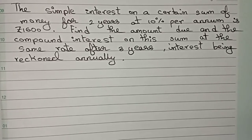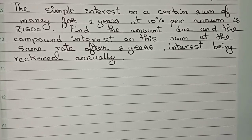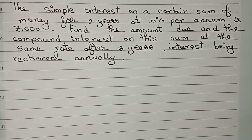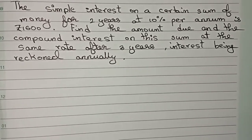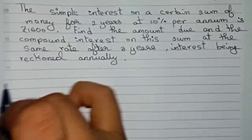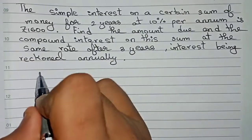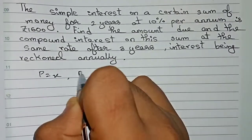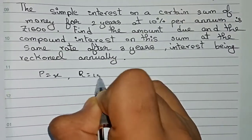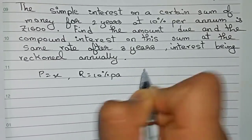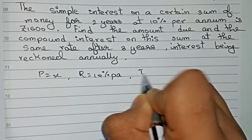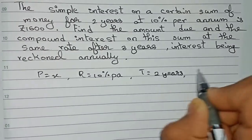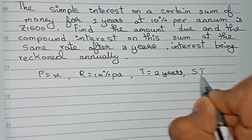We will solve this question using the simple interest formula. First, we will find out the principal as it is not given, so we write principal is equal to x. The rate is equal to 10% per annum, time is equal to 2 years, and the SI is given as rupees 1,600.